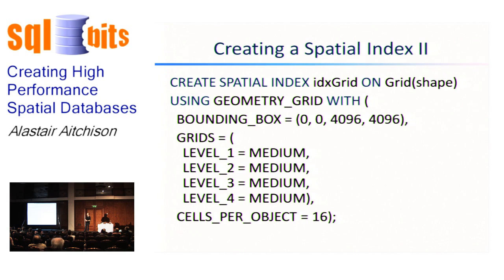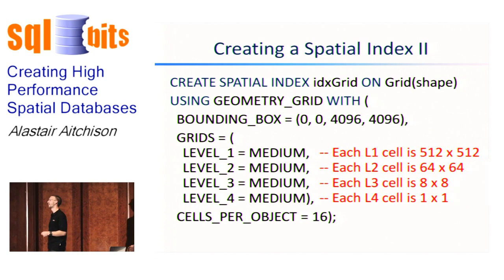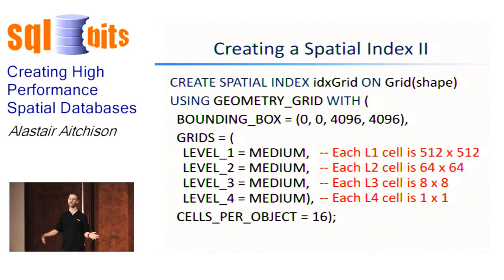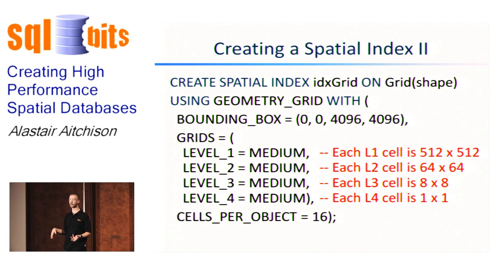And then we're doing the grids. I'm using medium resolution at every one of the four levels for this, so that's an eight by eight grid. And I'm keeping the cells per object limit at 16, which is the default. I said there was a reason why I'd chosen those values. If I use a medium grid resolution at each of the four levels, and my level one grid extends from 0,0 to 4,096, 4,096, each of my level one cells decomposes that space into an eight by eight grid. So each level one cell ends up being 512 by 512. Each level two cell divides that into eight again. So each level four cell for this example is a one unit high by one unit wide cell. That's just going to make the diagrams a bit easier to follow.